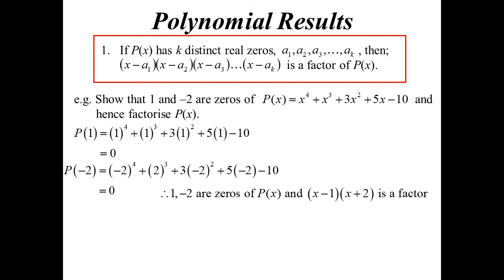And so we know that 1 and negative 2 are both zeros, therefore x minus 1, x plus 2 must be a factor. So, all right, let's factorise. I'm actually going to expand out the x minus 1, x plus 2.